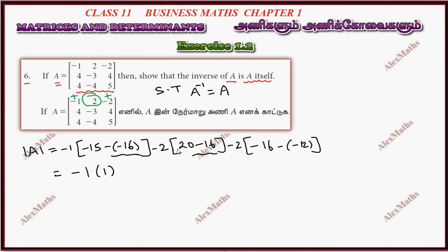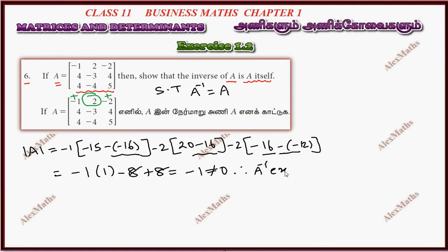This gives minus 2 and minus 8, then plus 12. Plus 12 minus 16 gives minus 4. Minus 4 into plus 8. The total cancels to minus 1, which is not equal to 0. Therefore, A inverse exists.